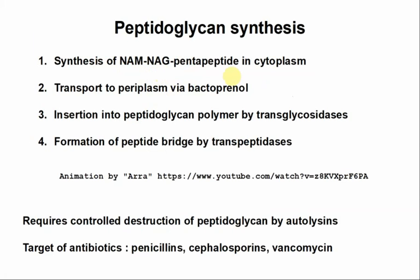So you need to understand why this happens - why wouldn't it be simple if it just produced the tetrapeptide? So the repeating subunit is synthesized in the cytosol, then it's going to be transported across the plasma membrane into the periplasm by bactoprenol, which is a kind of lipid transporter. Once in the periplasm, the NAM-NAG glycan part will be inserted into the NAM-NAG polymer by transglycosidases.